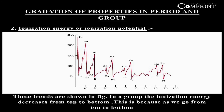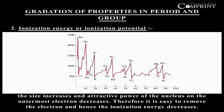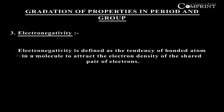In a group, the ionization energy decreases from top to bottom. This is because as we go from top to bottom, the size increases and the attractive power of the nucleus on the outermost electron decreases. Therefore, it is easy to remove the electron and hence the ionization energy decreases.